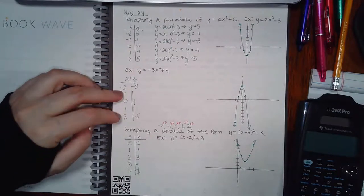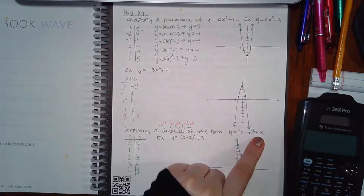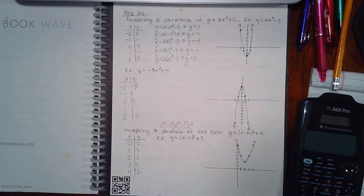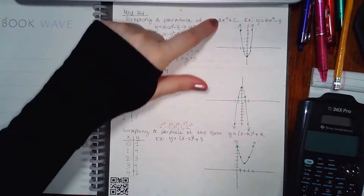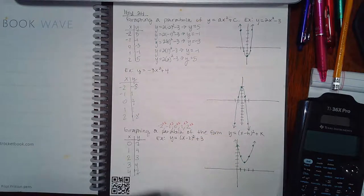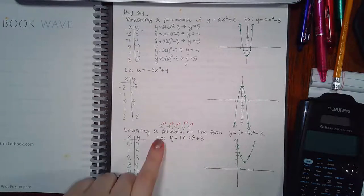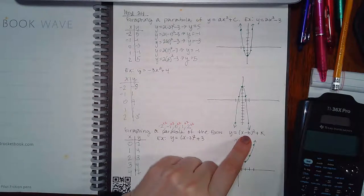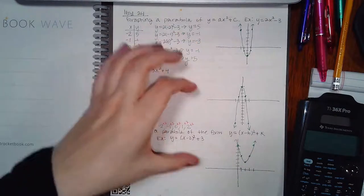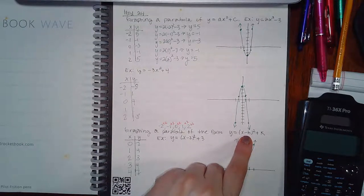This topic is different from the previous one — look at the form of the equation. Here they call the constant k instead of c, but that doesn't matter; there's still a number being added outside the square. What's new is there's now a number being added or subtracted on the inside. When you add or subtract something inside the parentheses, it horizontally translates the graph — the whole graph moves either to the left or to the right.